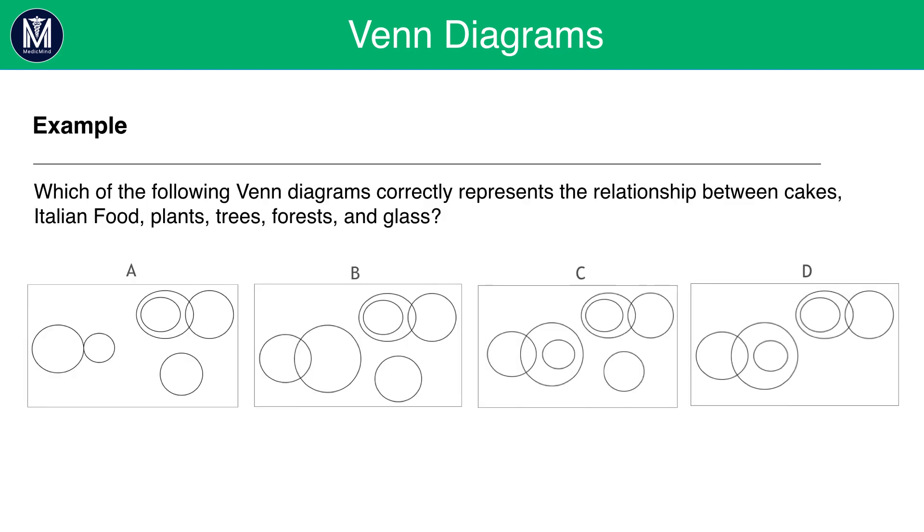Let's have a look at an example. Which of the following Venn Diagrams correctly represents the relationship between cakes, Italian food, plants, trees, forests and glass? Take a moment to pause the video here.